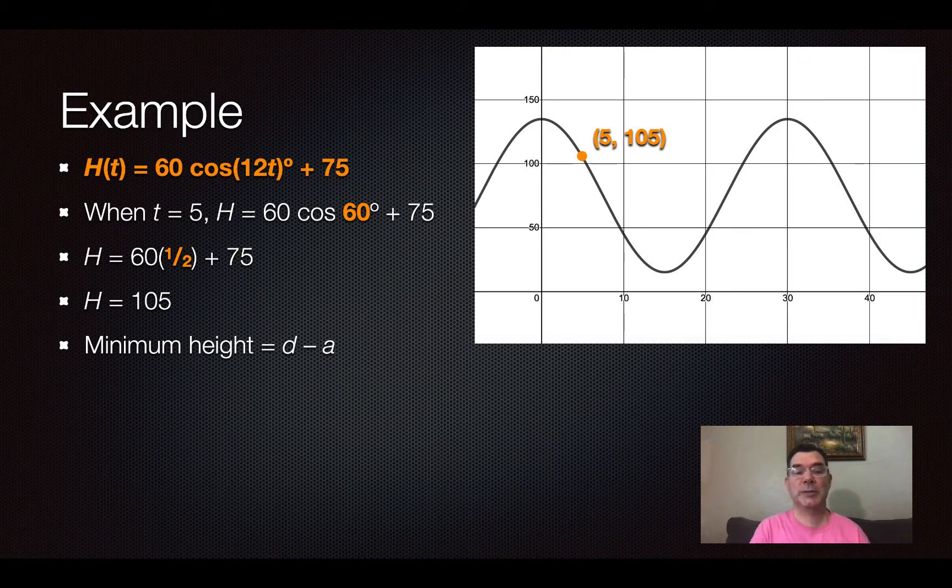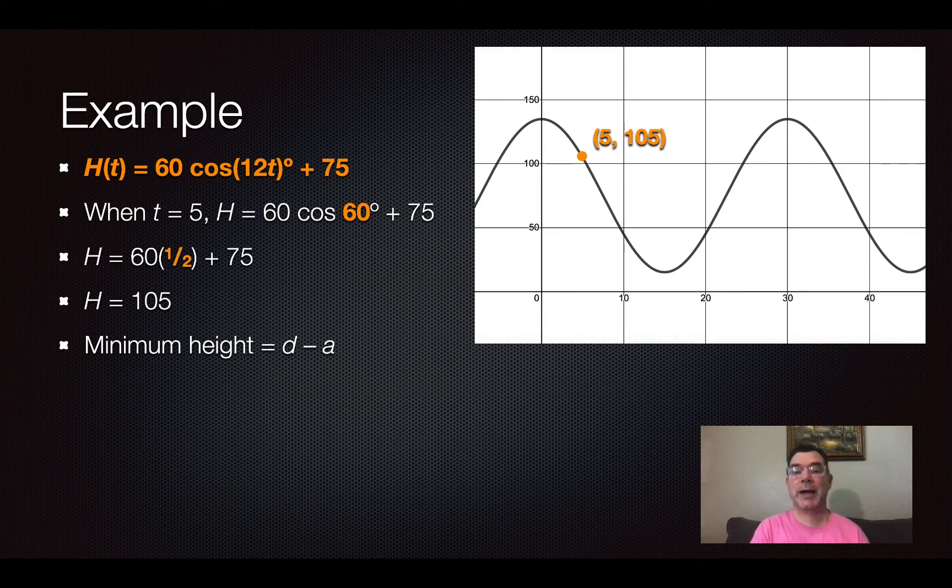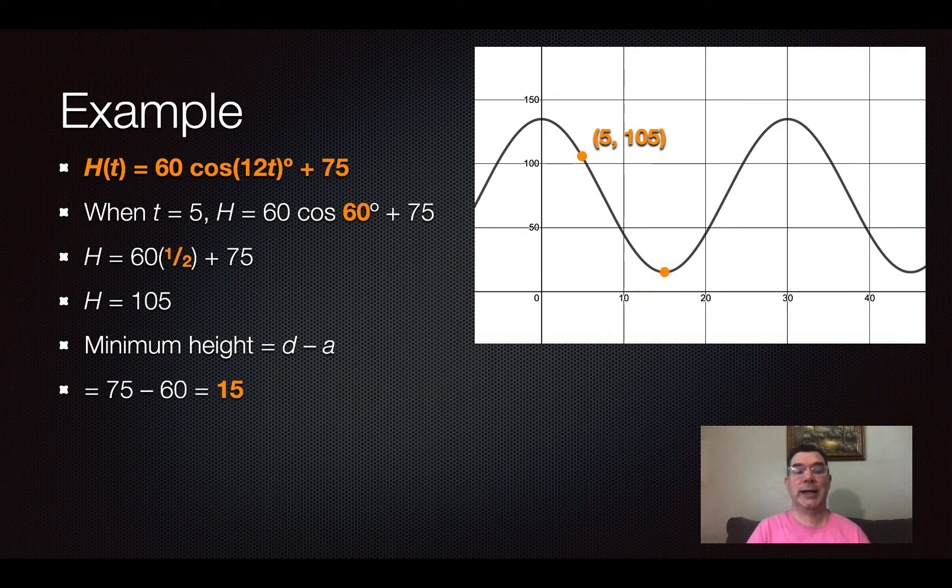The minimum height is going to be the principal axis D minus my amplitude. So I need to figure out what both of those are. But just by looking at the curve, remember where D is and where A is.